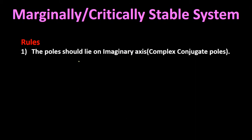The rules for finding marginal stability are as follows. First, the poles of the transfer function should lie on the imaginary axis (j·omega axis) and should be complex conjugate poles of the form −a ± jb. For marginal stability, the real part of the complex conjugate pole should always be negative, lying in the left half of the s-plane. If the real part is positive (i.e., +a ± jb), the pole moves to the right half and the system becomes unstable.